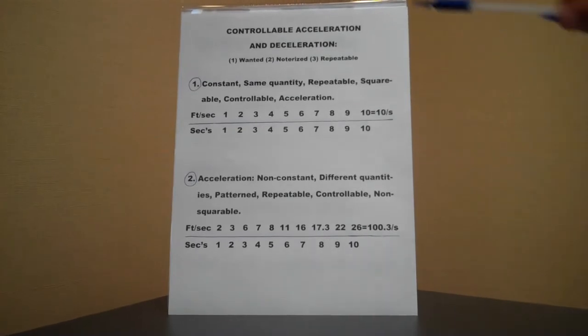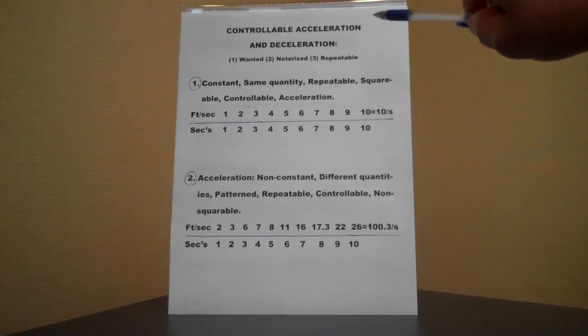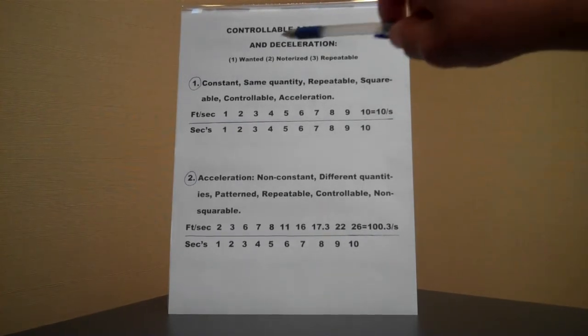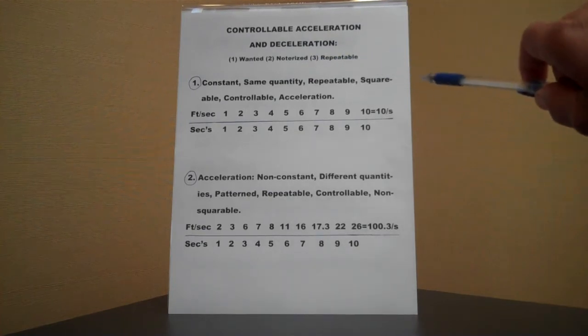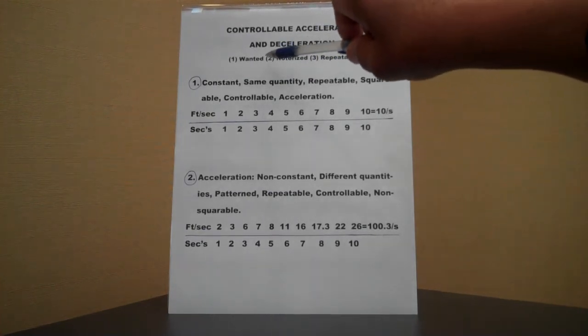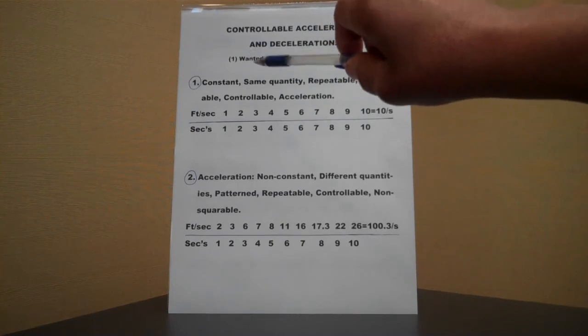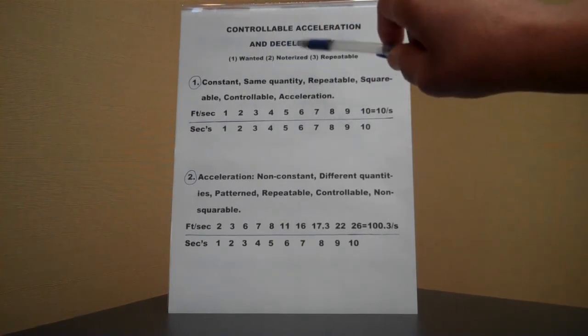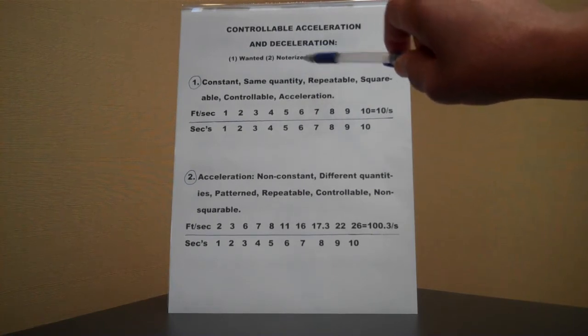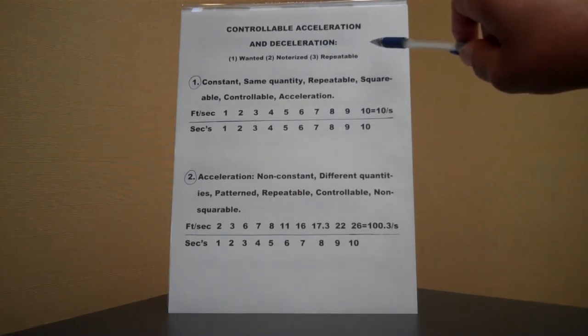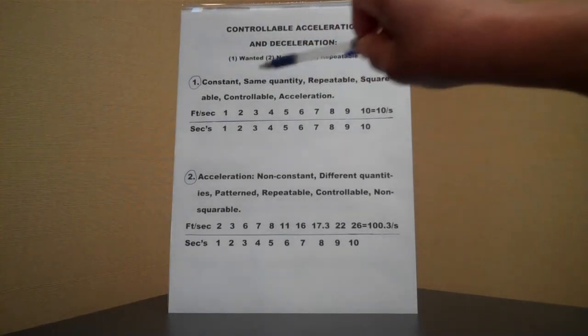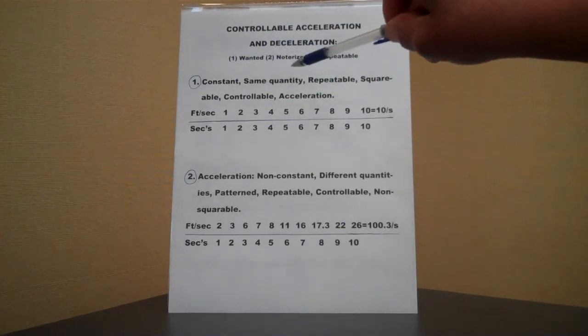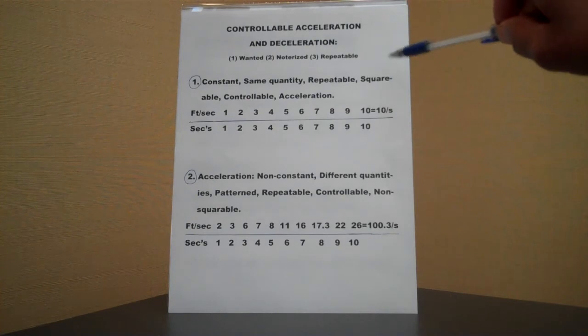The first thing we shall look at is controllable acceleration and deceleration. This type of acceleration and deceleration, as you can see, number one here, is where you want it or need it to be so. You want to control it. You want to notarize all of its components, and you want it repeatable as you would like it. We'll start with number one. Constant, same quantity, repeatable, squarable, such as two seconds squared and so forth.